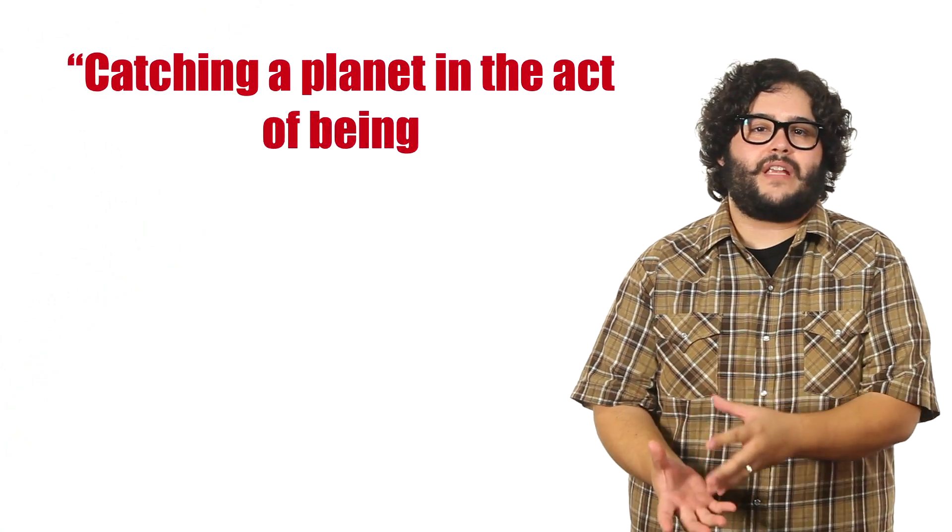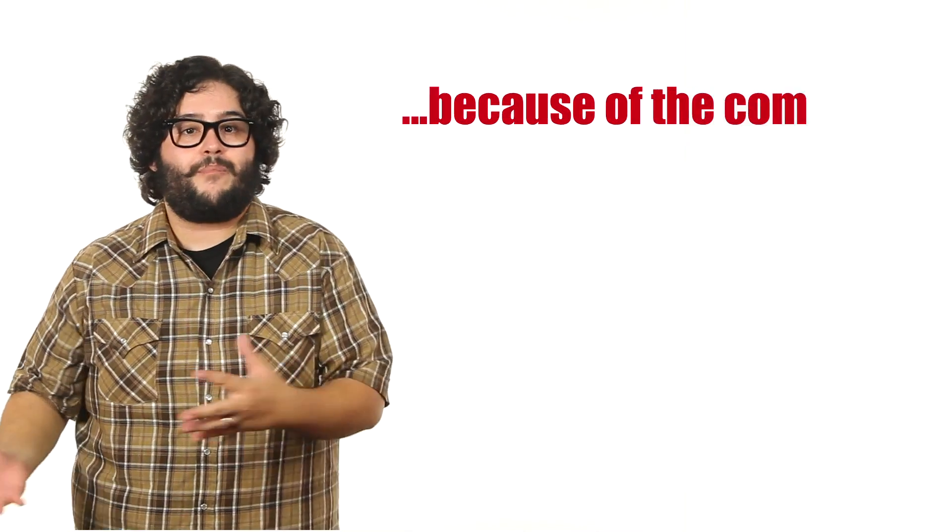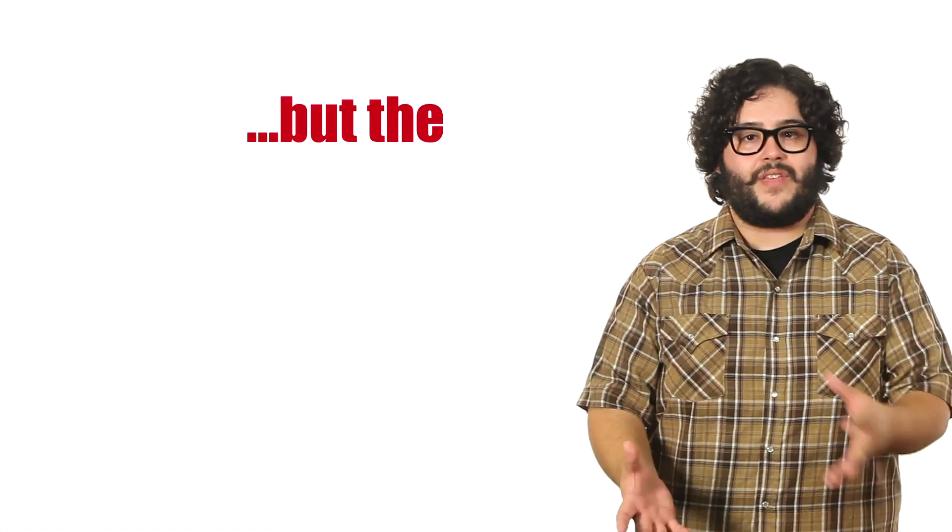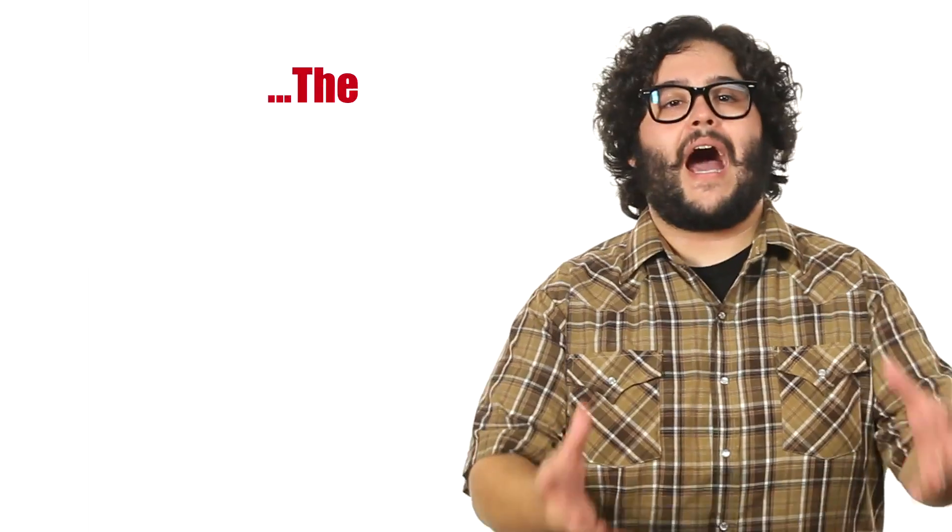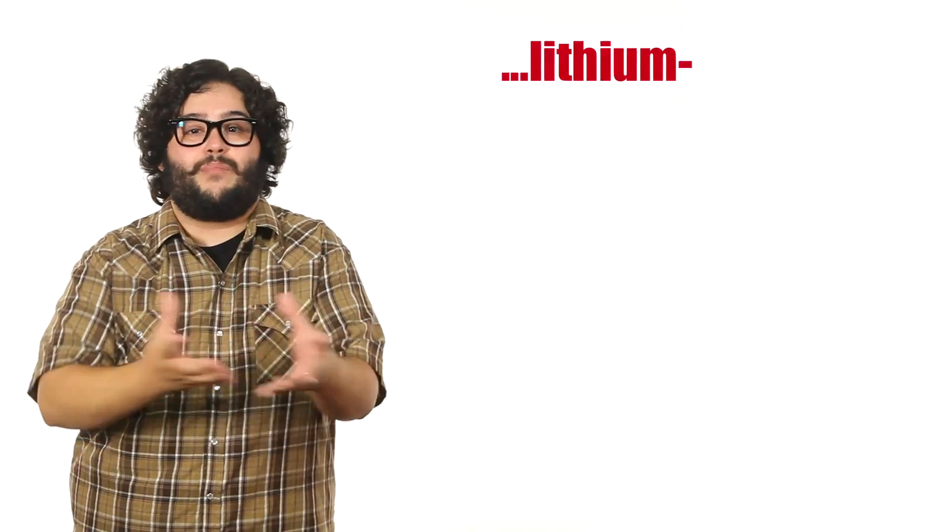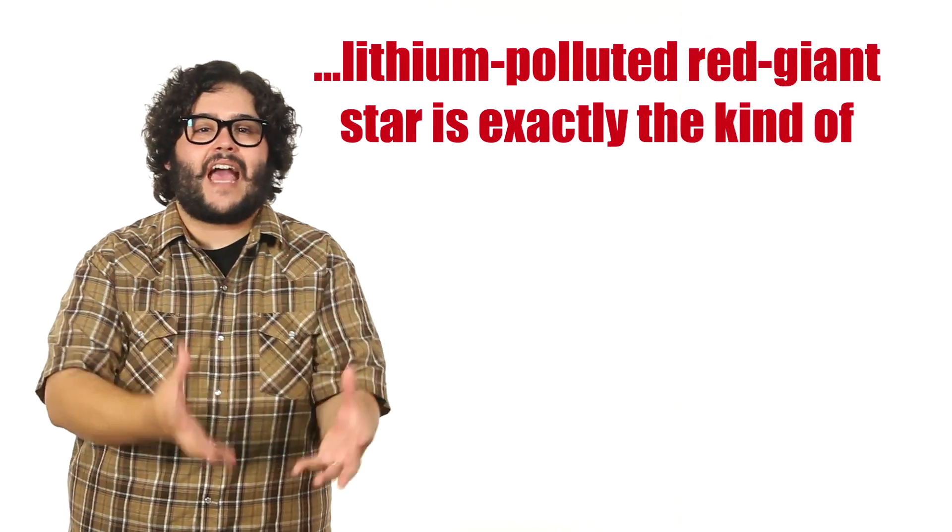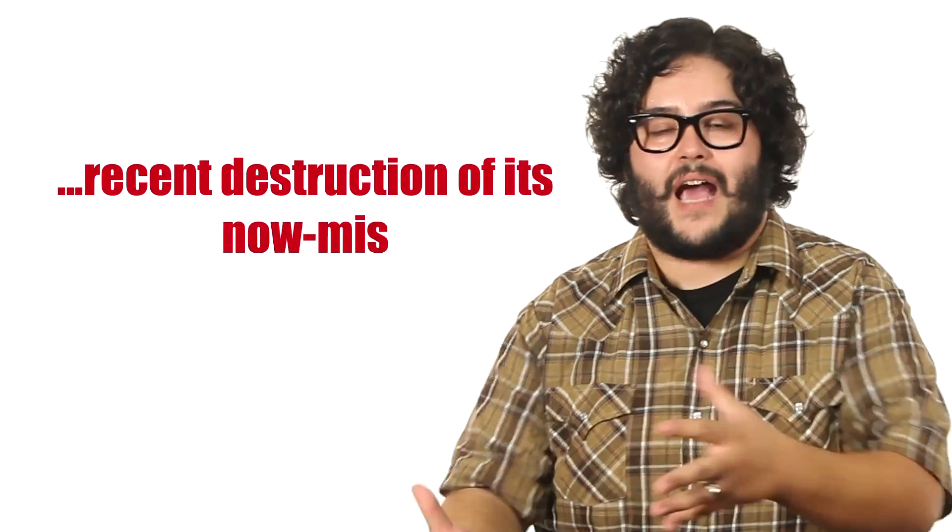Eva Villever of Universidad Autónoma de Madrid in Spain said, catching a planet in the act of being devoured by a star is an almost improbable feat to accomplish because of the comparative swiftness of the process, but the occurrence of such a collision can be deduced from the way it affects the stellar chemistry. The highly elongated orbit of the massive planet we discovered around this lithium-polluted red giant star is exactly the kind of evidence that would point to the star's recent destruction of its now-missing planet.